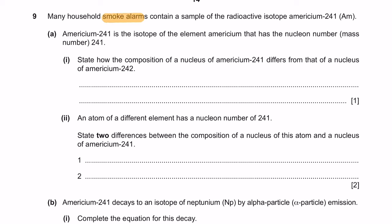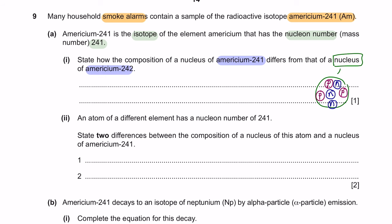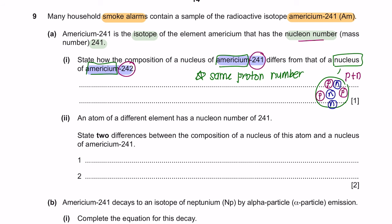Question 9: Many household smoke alarms contain a sample of the radioactive isotope americium-241. Question E, Part 1: State how the composition of a nucleus of americium-241 differs from that of americium-242. The nucleon number is the total number of protons plus neutrons. Since both are the same element (americium), they have the same proton number. Therefore, they differ by having a different neutron number — americium-241 has one fewer neutron than americium-242.